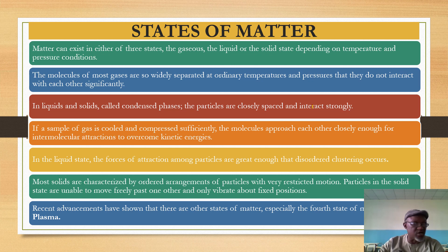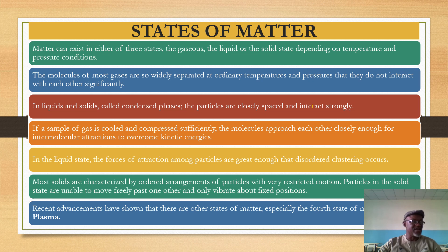These three basic states of matter exist, but we also have a fourth state called plasma. Plasma behaves like a gas, which is why we take three states as the basic states. There are also other sub-states of plasma — about 12 or more — but at this stage we concentrate on the solid, liquid, and gaseous states, mentioning plasma as the fourth state.